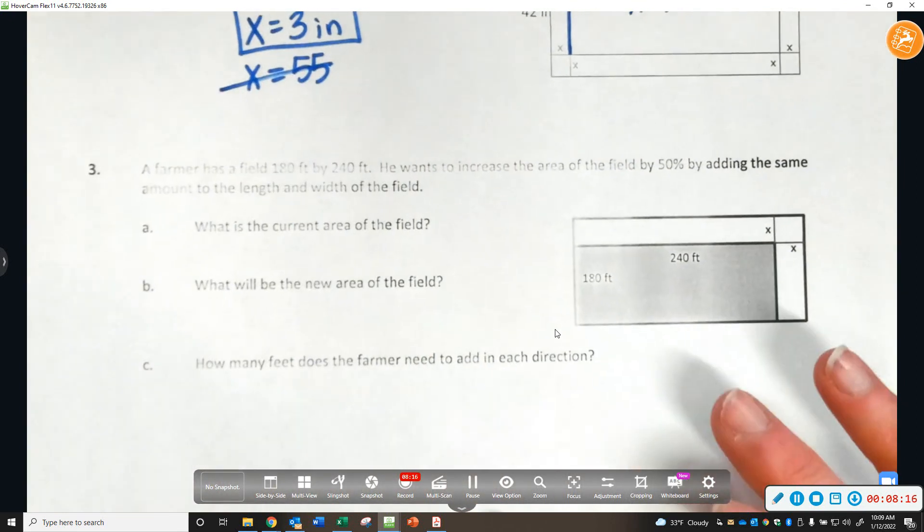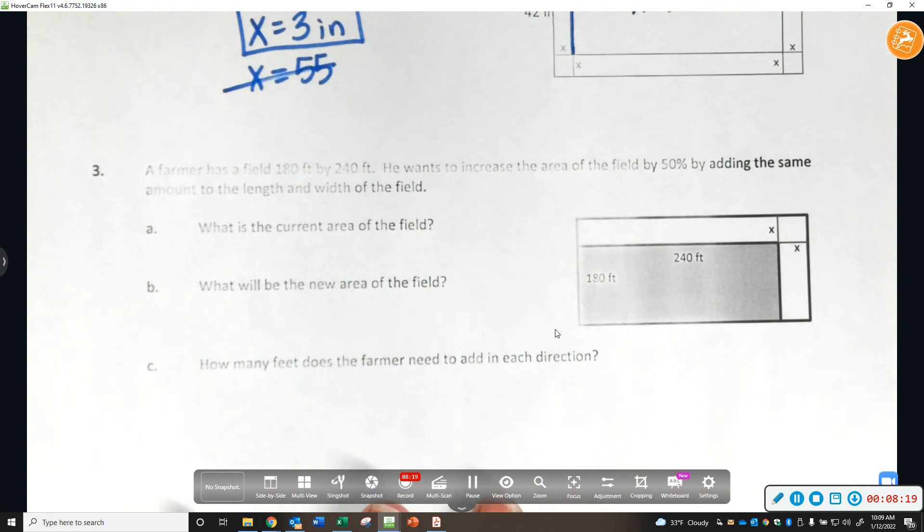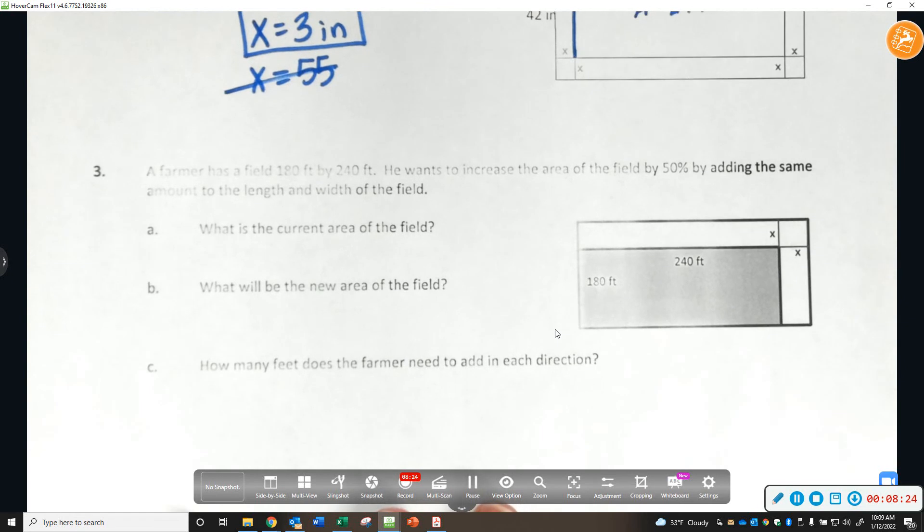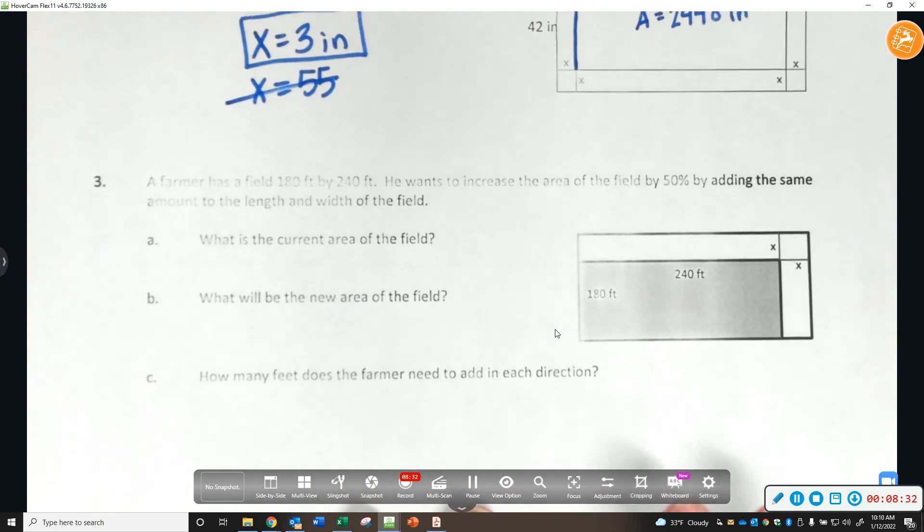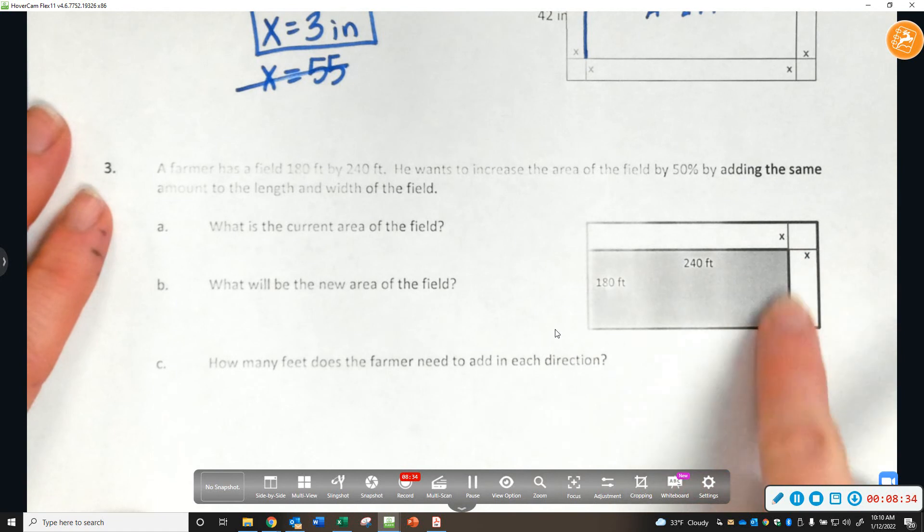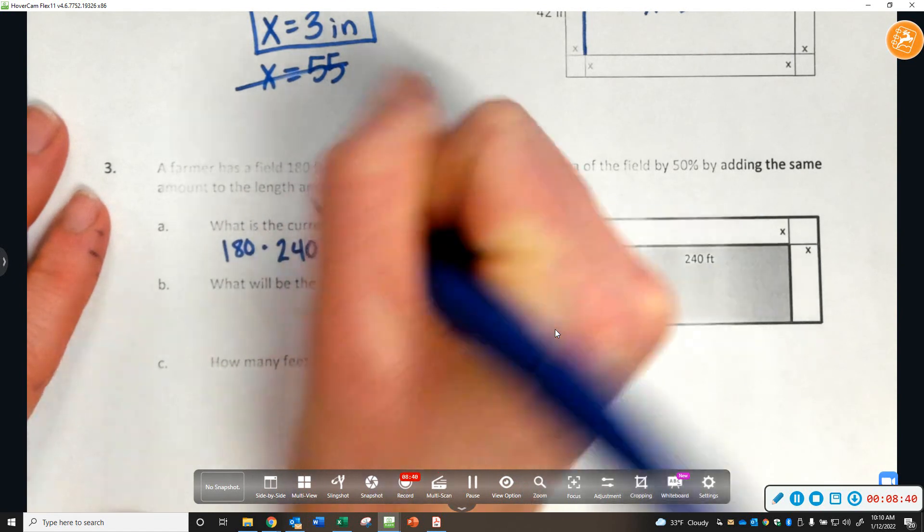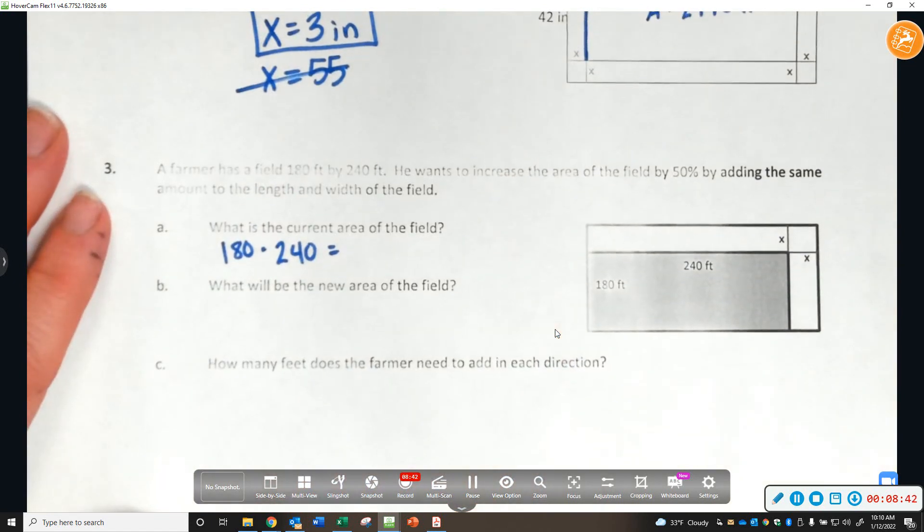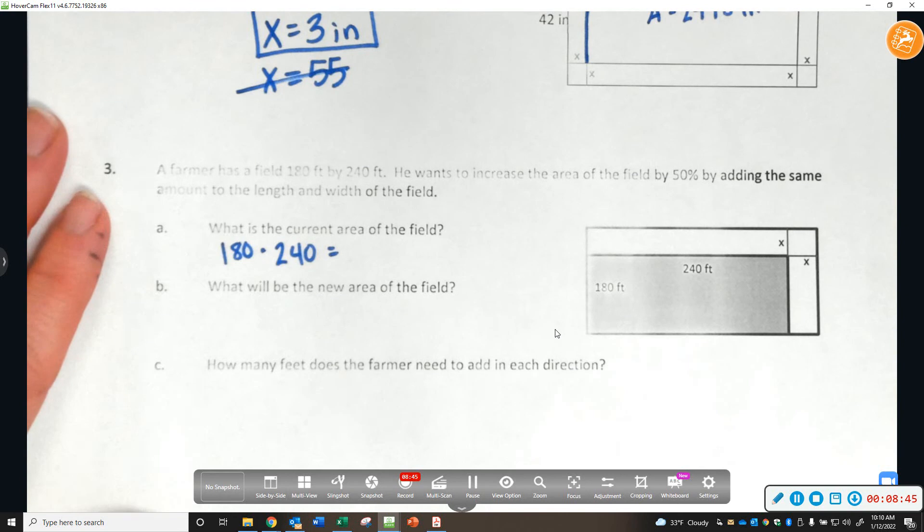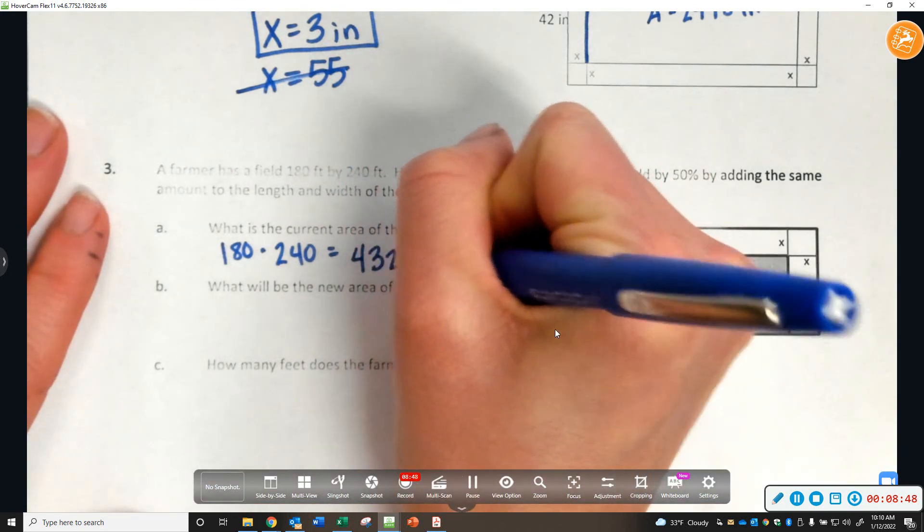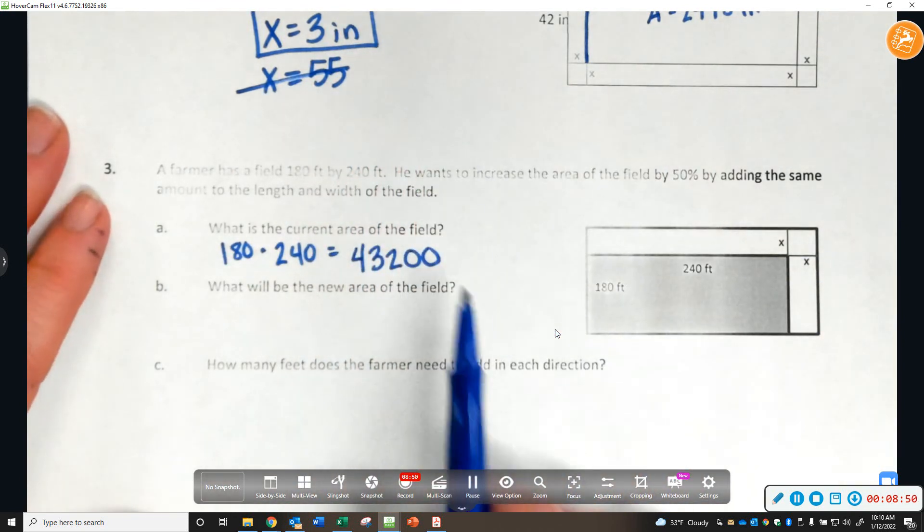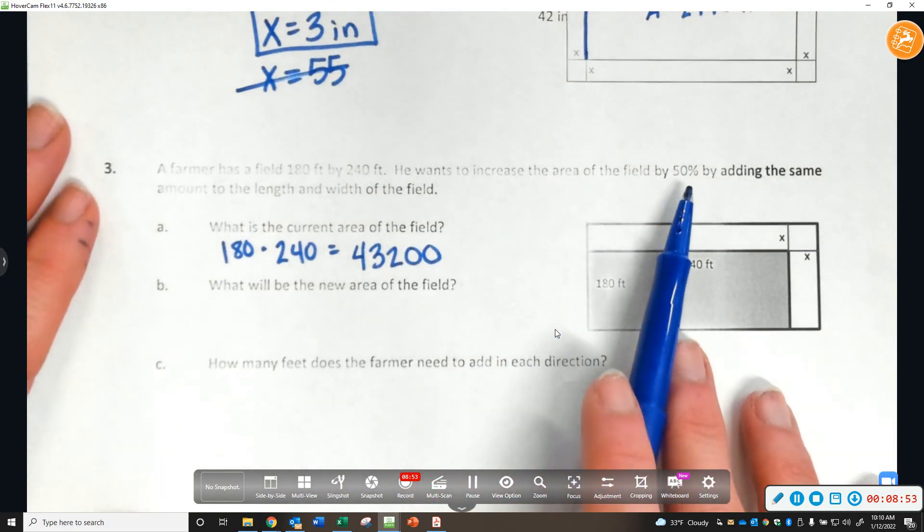So, we have one more example and then you get to do a couple on your own. A farmer has a field of 180 feet by 240 feet. He wants to increase the area of the field by 50% by adding the same amount to the length and width of the field. So, what is the current area of the field? Well, 180 times 240, and I get 43,200.